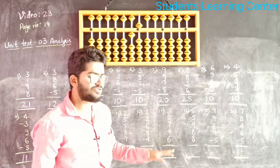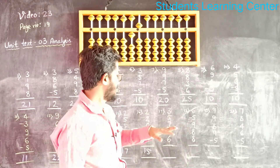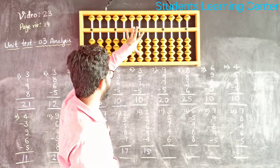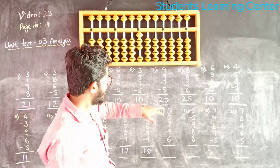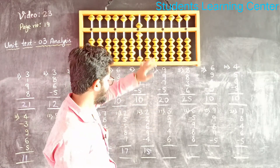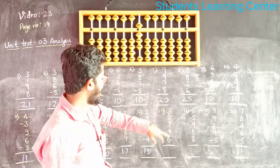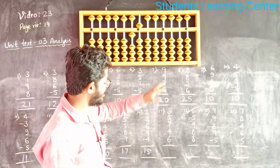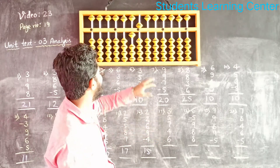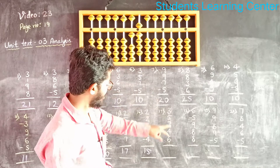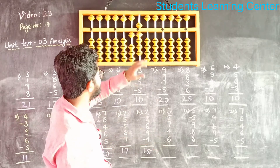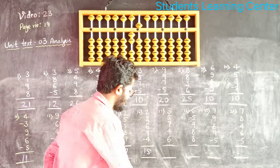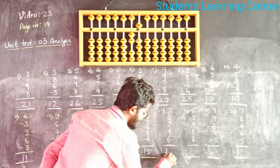Next question. Add 3, add 5, add 7, add 10 less 3, add 4, add 6, add 10 less 4. 25 is the answer.